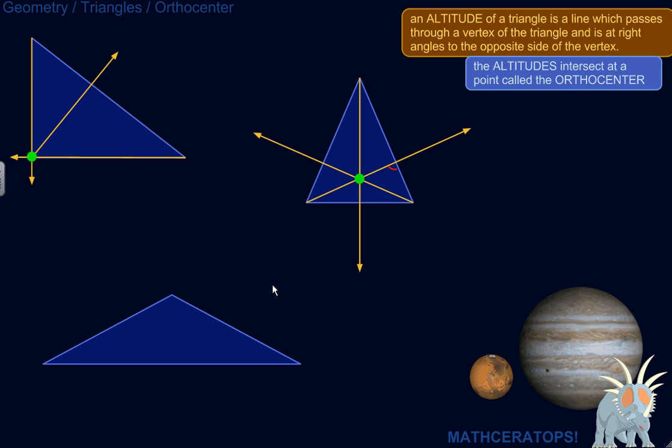This obtuse triangle is going to be slightly harder, but that's okay. What we have to do is actually extend the sides a little bit. So I'm passing through this vertex, and I'm trying to hit this opposite side at a right angle. Well, you know, you can't get a right angle on the actual side itself. So what if I extend it?